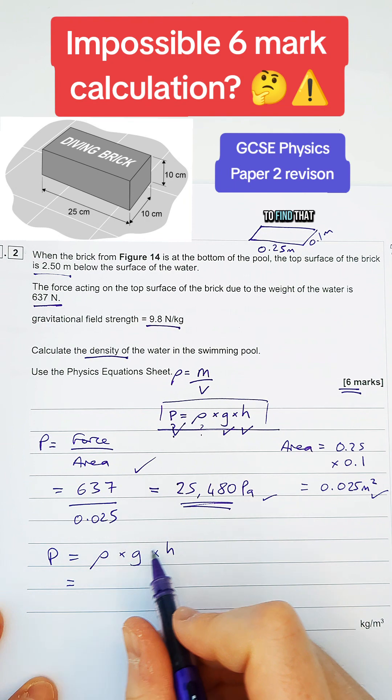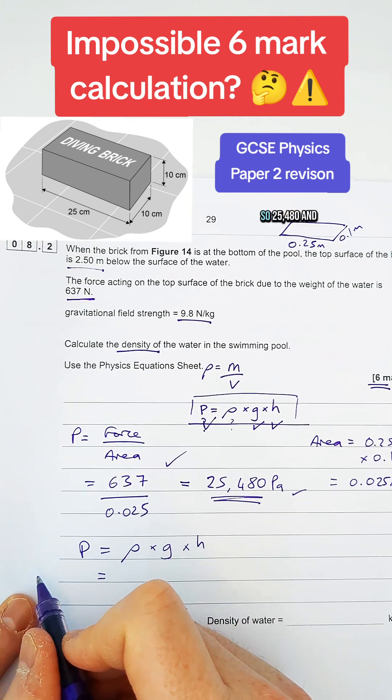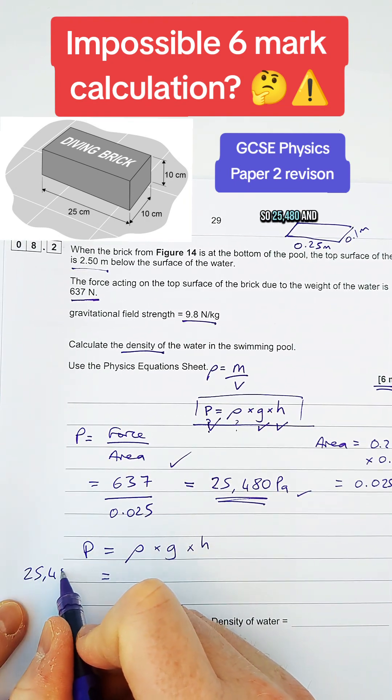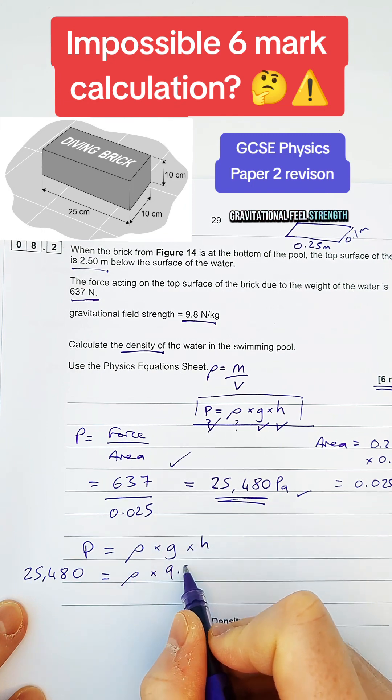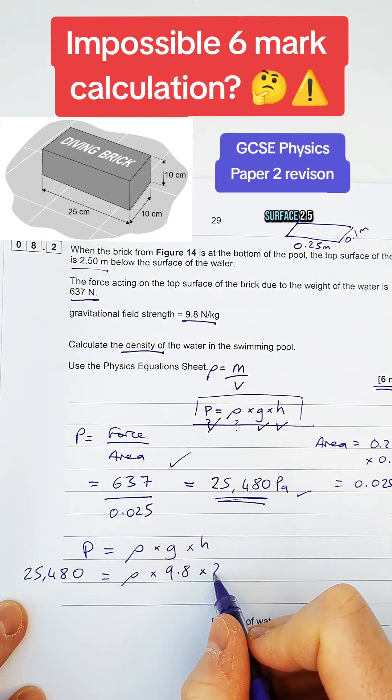So density, and we're trying to find that. Pressure, we've got our value from earlier, so 25,480. And gravitational field strength, 9.8. Height below the surface, 2.5.